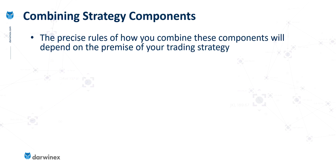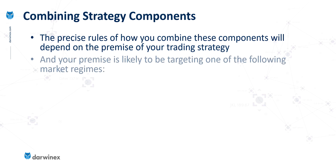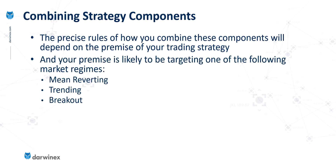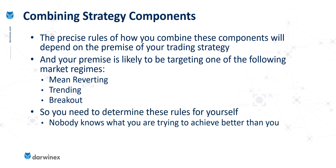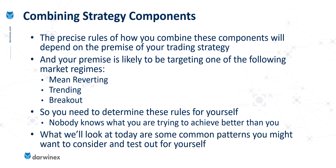The detail of how you combine filters will depend on your own trading strategy, but it's likely that your premise will be targeting one of these types of market regime: either a mean reverting market, a trending market, or one where the price action is about to break out of a trading range and maybe into a trend. Because there isn't anyone who understands your system as well as you do, you're going to have to come up with the precise rules. However, there are some common patterns that traders use, and I'm going to take you through these today. You can back test these scenarios on your own system to see how well they perform.